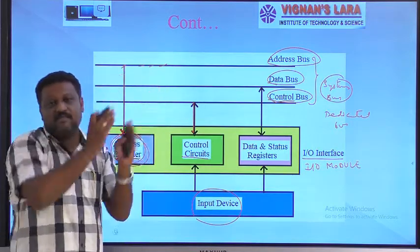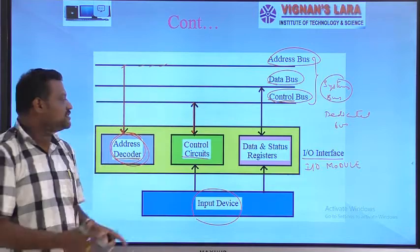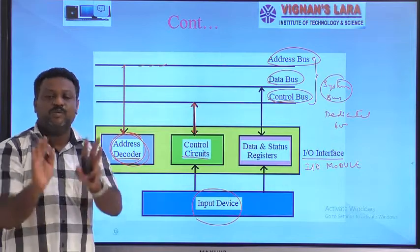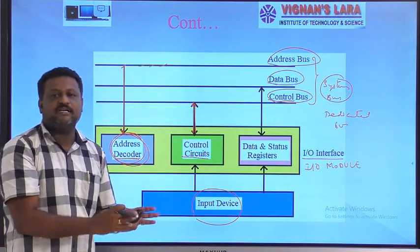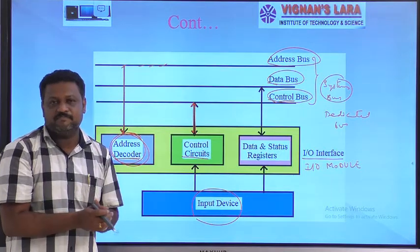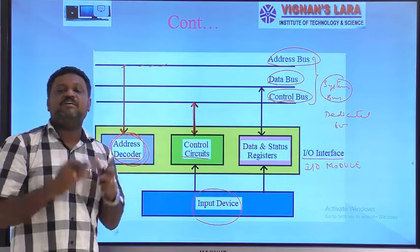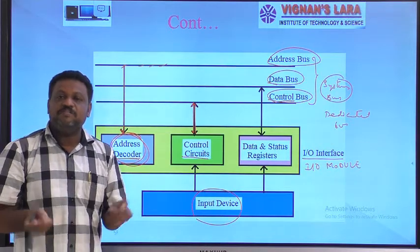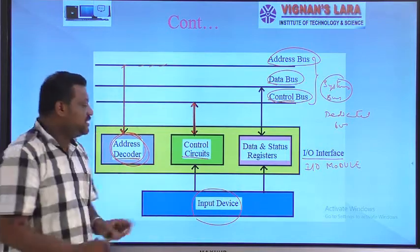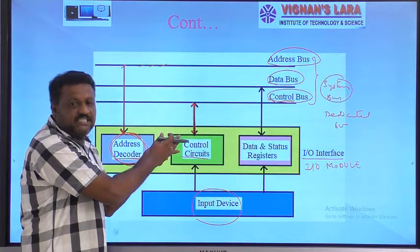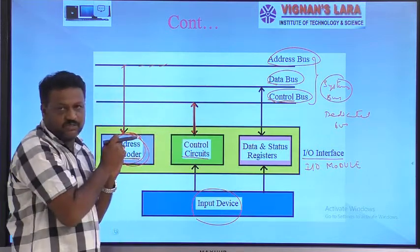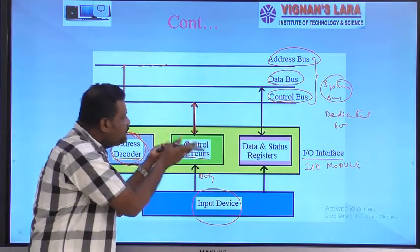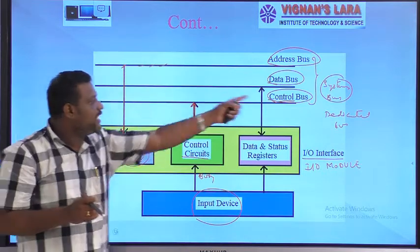The I/O module sends back the status of the I/O device to the processor via the control bus. I/O devices are not always in a ready state — sometimes the device is busy with a previous task assigned by the processor. In that case, the I/O device sends back a busy status to the control circuits, and the I/O module forwards the same information to the processor via the control bus.